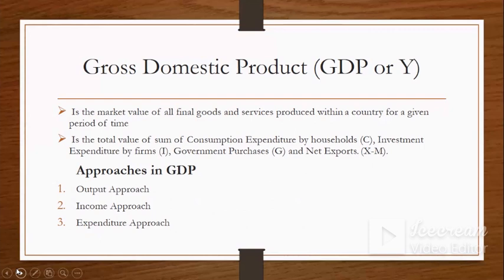GDP actually changes every year. Before the pandemic we had a good GDP, but during the pandemic we had less GDP — that's why it is measured for a given period of time. GDP is the total value of consumption expenditure by households, investment expenditure by firms, government purchases, and net exports (X minus M).